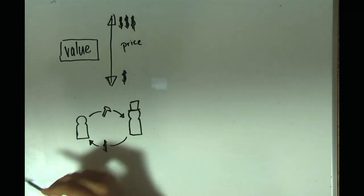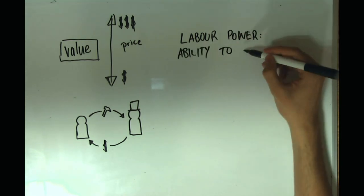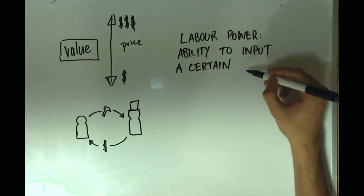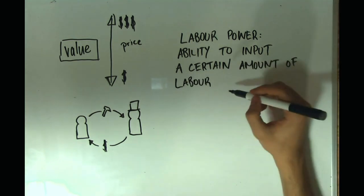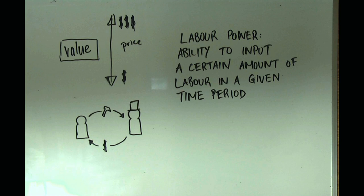According to Marx, workers sell what is known as labor power, or the ability to input a certain amount of labor in a given time period. Labor is therefore a commodity, though it's a particularly special one for a few reasons. Again, we won't get into these reasons in this video. What's important is understanding that labor power is a commodity, and that it is bought and sold like all other products on the market.